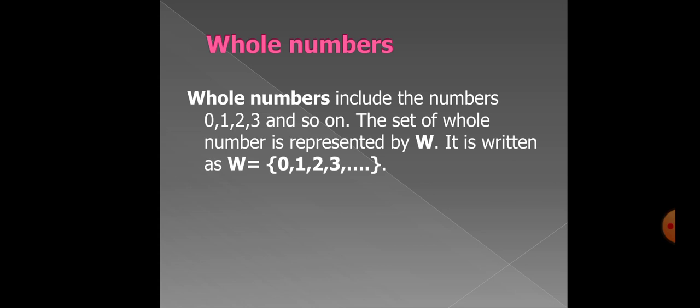If we look at it, there is only zero difference in it. Natural numbers always start 1 and the whole numbers start 0. Natural numbers are denoted by N and the whole numbers are denoted by W. So the difference is only zero.